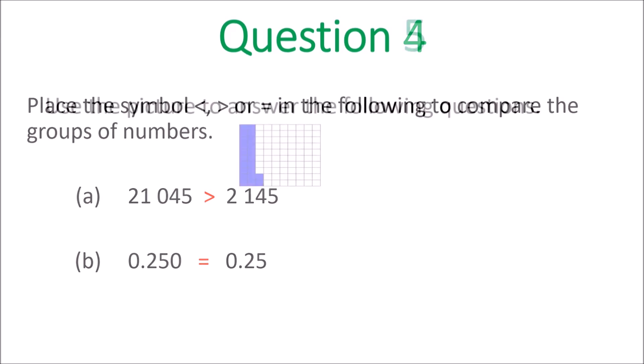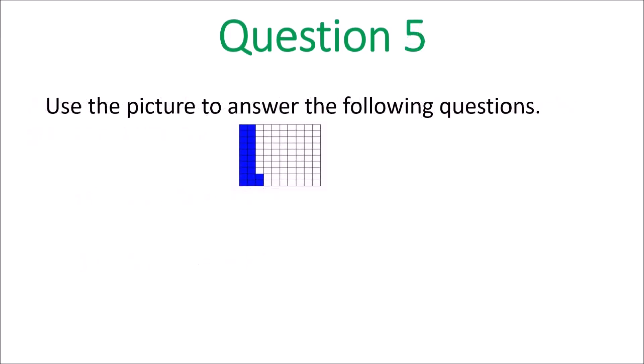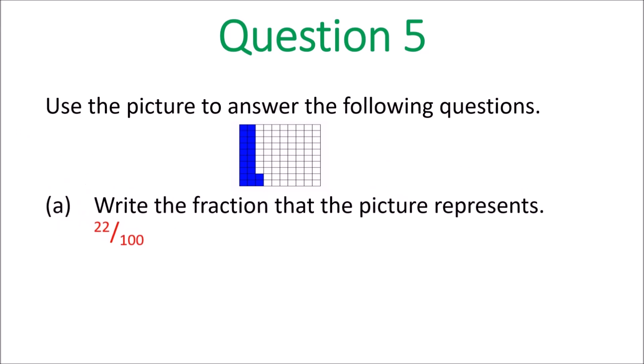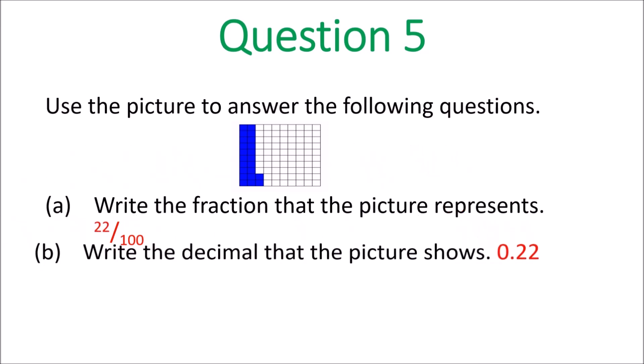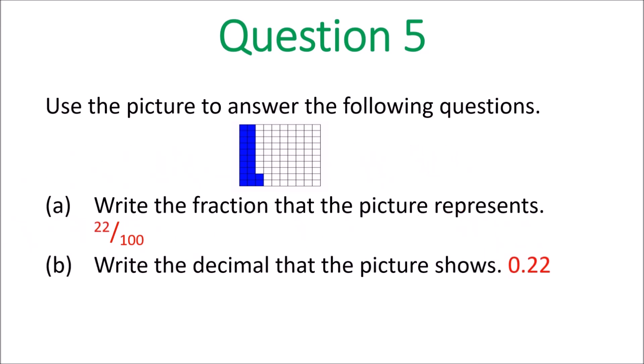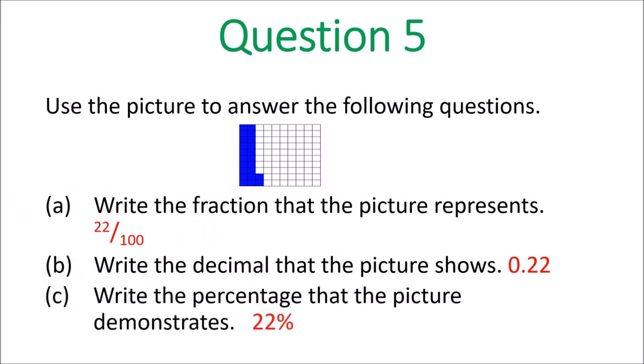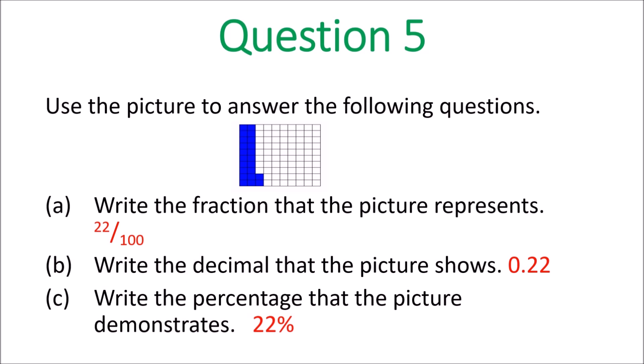Question 5: use the picture to answer the following questions. The first question was write the fraction that the picture represents — 22 of them, so it's 22 hundredths. B: write the decimal — that would be 0.22, simple and straightforward. And C: write the percentage — 0.22 is 22 percent, straightforward as well.